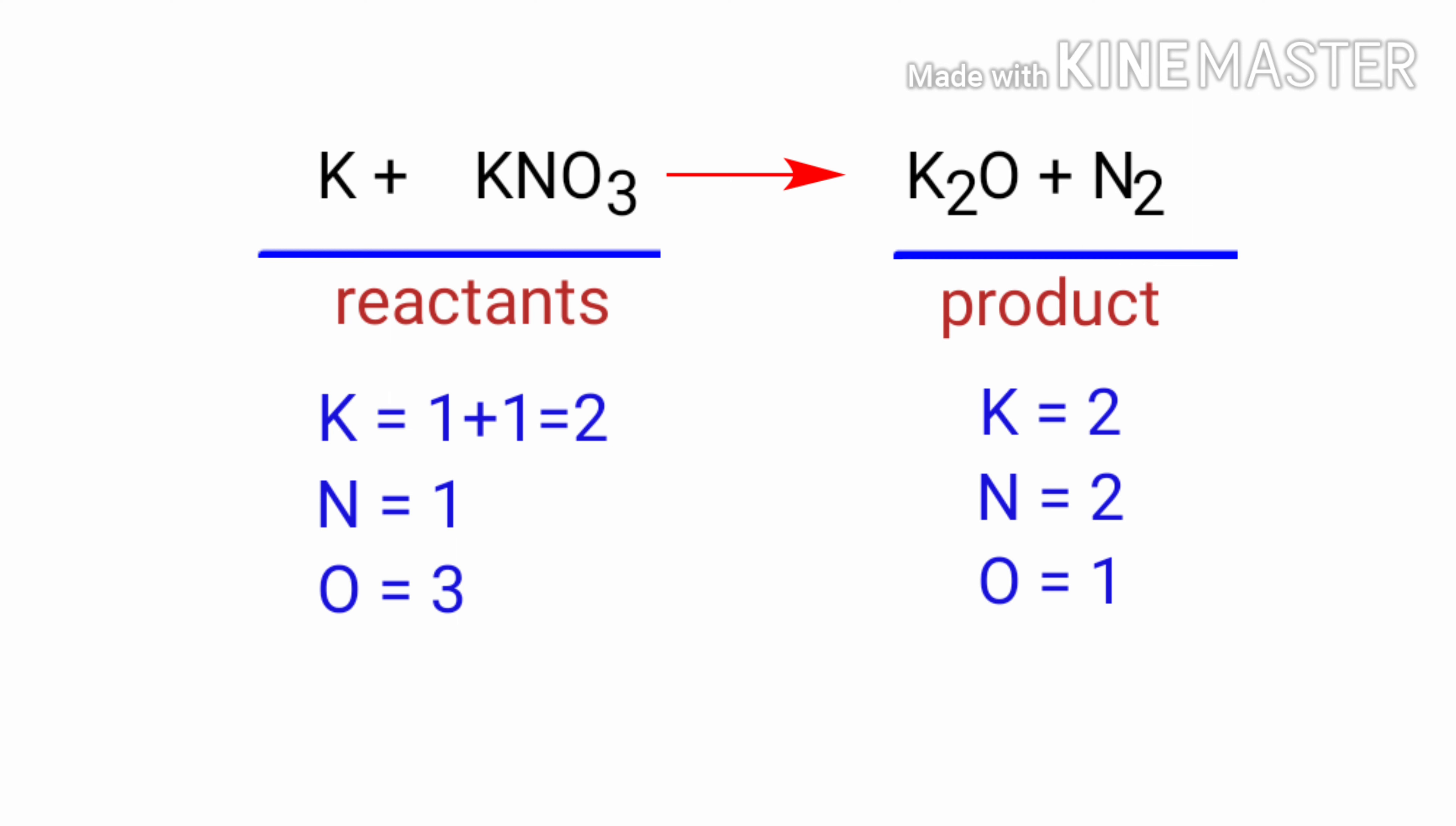In the reactants side, there are two potassium atoms, one nitrogen atom and three oxygen atoms present.